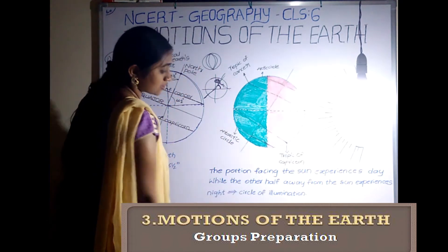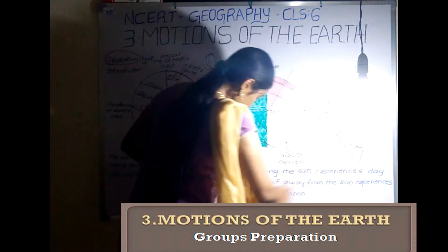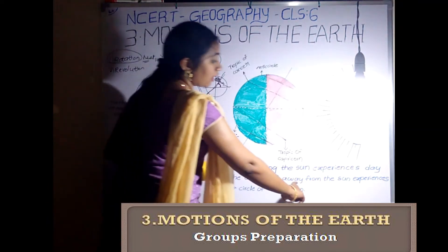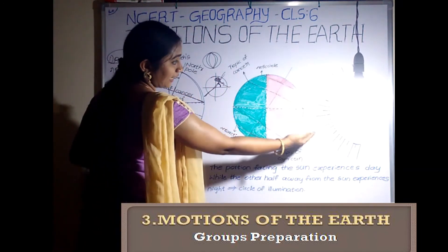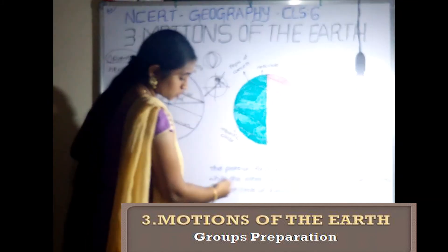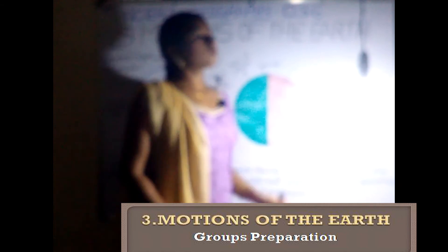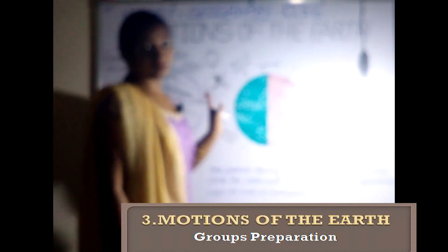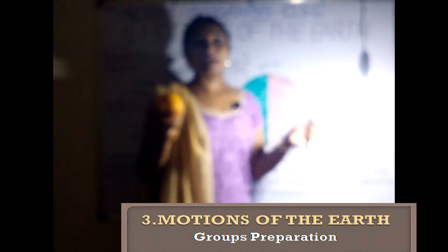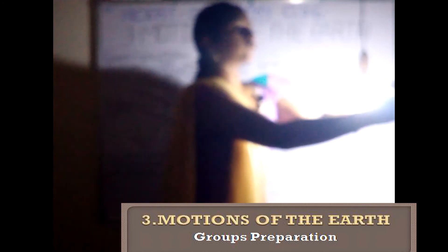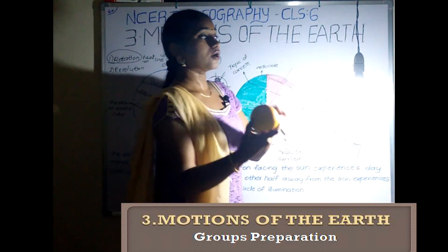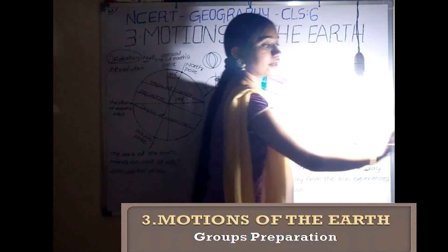That is the circle of illumination. The portion facing the sun experiences day, while the other half away from the sun experiences night. This boundary between day and night is called the circle of illumination.